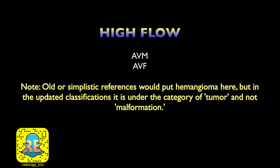High-flow vascular malformations — which are not today's case — include arteriovenous malformations, arteriovenous fistulas, and some books include hemangiomas. With these high-flow abnormalities, you'd expect to see lots of blood vessels showing signs of high flow on any imaging modality. On MRI specifically, residents should note these vessels appear as signal voids, easily seen on T2 or gradient echo images. AVMs involve direct communication between artery and vein via an abnormal nidus without the normal capillary bed; AVFs involve immediate direct artery-to-vein communication.